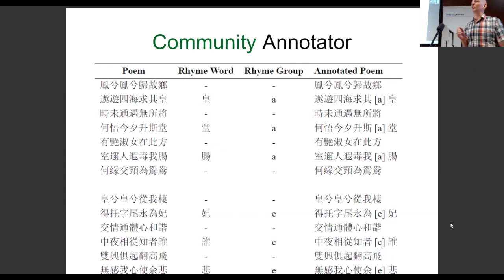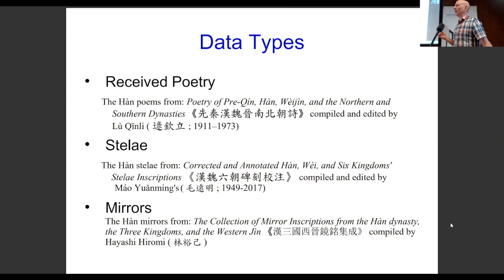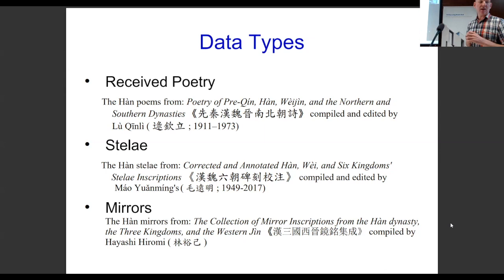As I mentioned earlier, Julian in his paper also looked at different cases where you look at all three agree, and then two agree with one disagreeing — and then the odd man out is different for different cases. We'll look at some of these cases. As I've already mentioned, we're looking at received poetry, stele, and mirror data. Our received poetry comes from the book by Lu Qin Li, where he collects from Qin Han, Wei Qin, and the Northern and Southern Dynasties — but we're only using the Han data from that. And then the stele also from the Han.